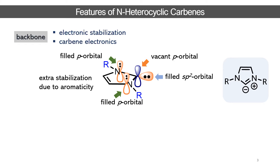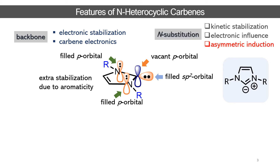The structural features are very important. First is the backbone: this cyclic backbone gives a bent structure. The N-C-N bond angle is crucial for obtaining a stable singlet carbene. In cyclic molecules, we generally have a strained structure, and this bond angle is quite low compared to the expected sp3 or sp2 values, giving us a stable singlet carbene whose structure influences the carbene electronics through various orbital interactions.